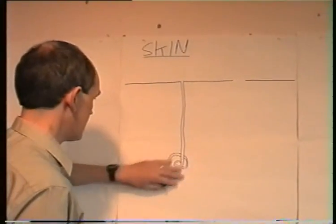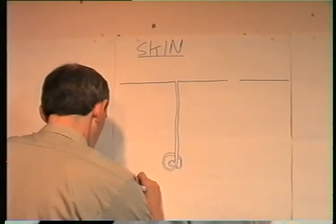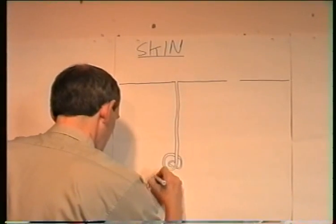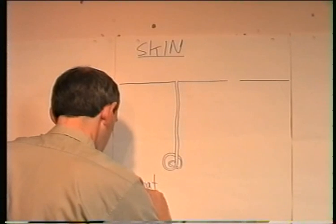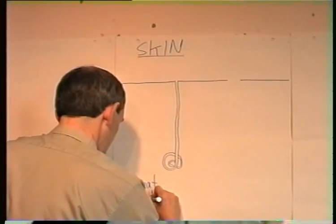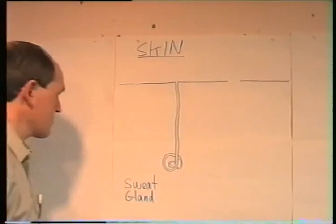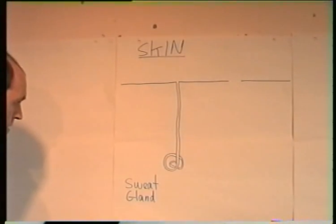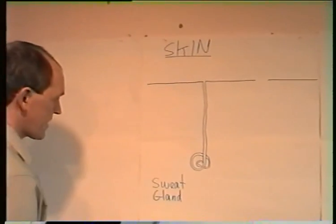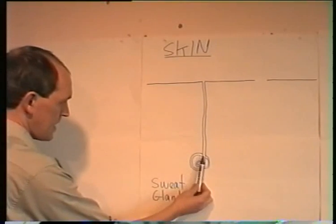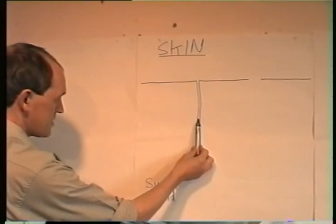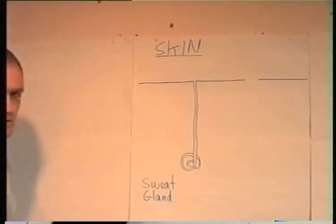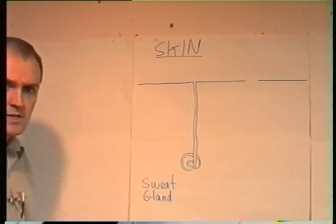So this structure here is a sweat gland, located fairly deep in the skin. Sweat will be produced in the sweat gland and would rise up the duct — this is the duct of the sweat gland — where it would be deposited on the surface of the body as sweat.